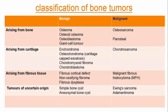For those arising from cartilage, in their benign form we have enchondroma, osteochondroma (also known as cartilage cap exostosis), chondromyxoid fibroma, and chondroblastoma. While their malignant form is chondrosarcoma.